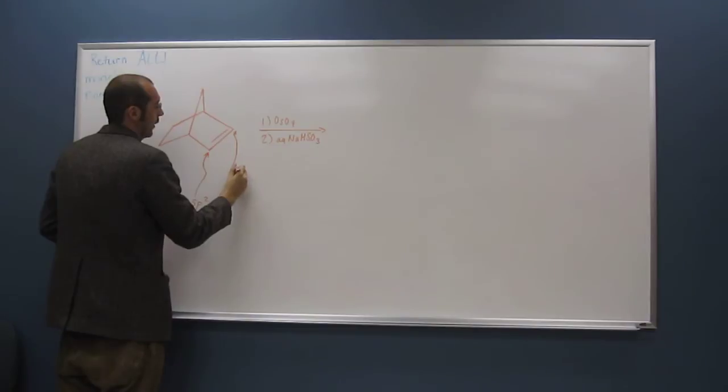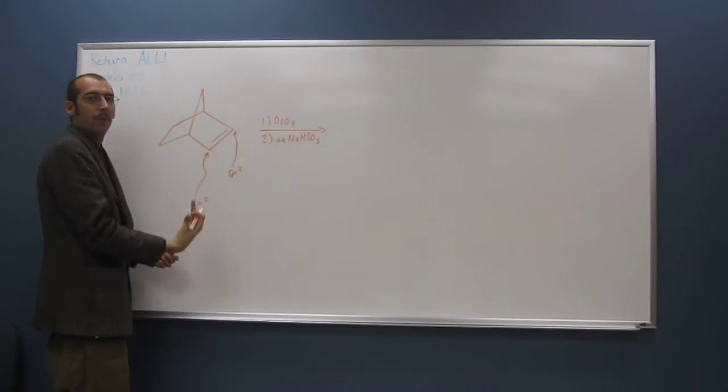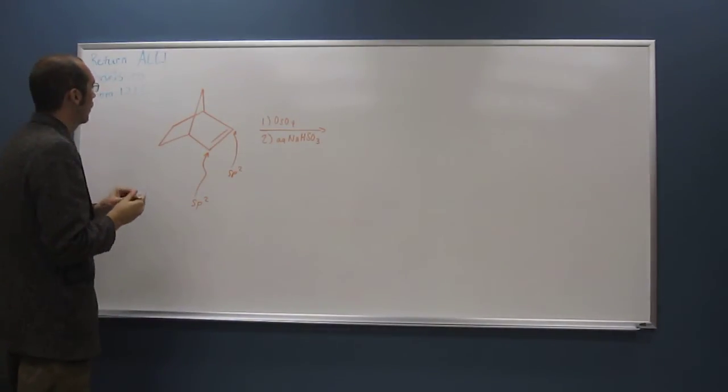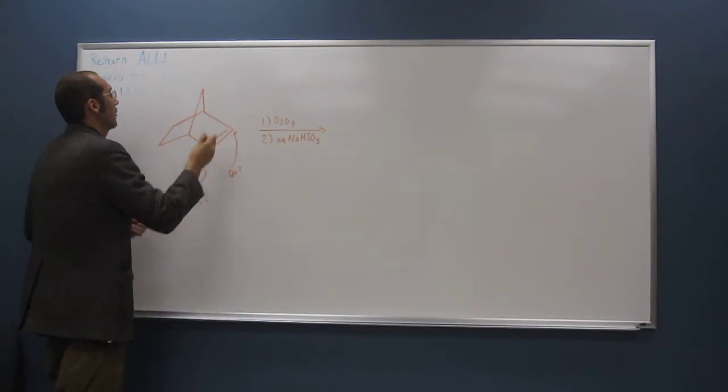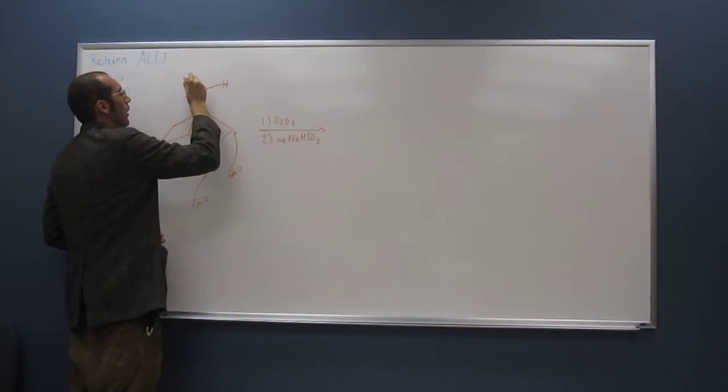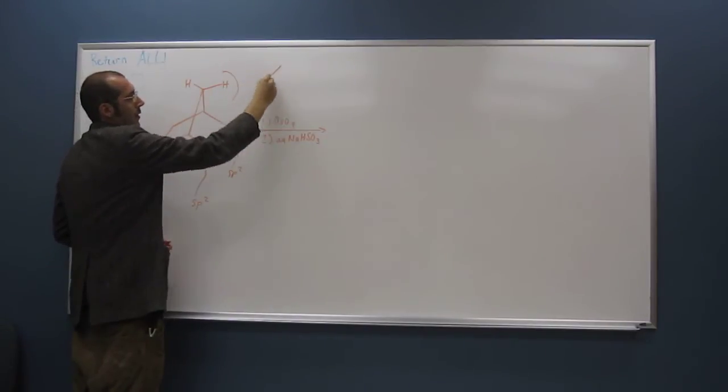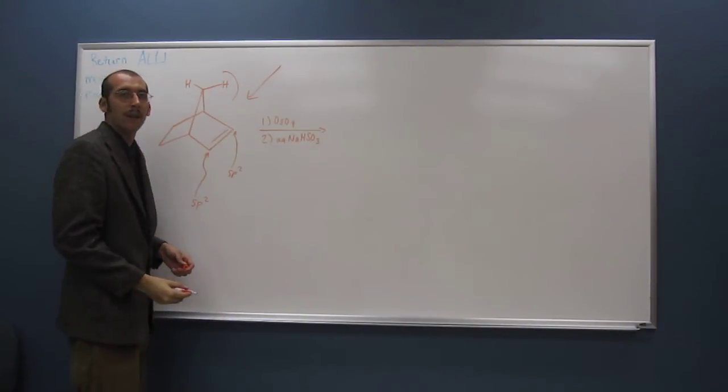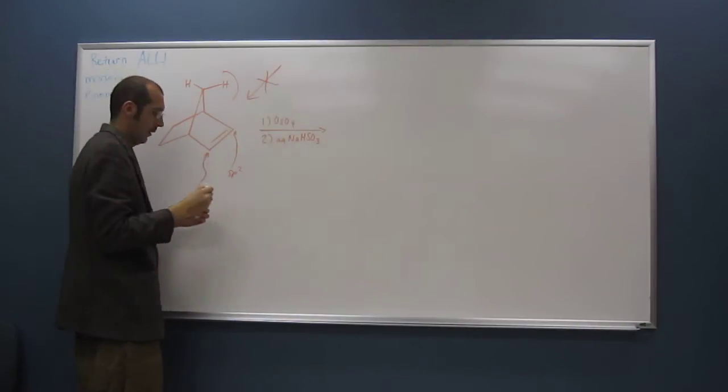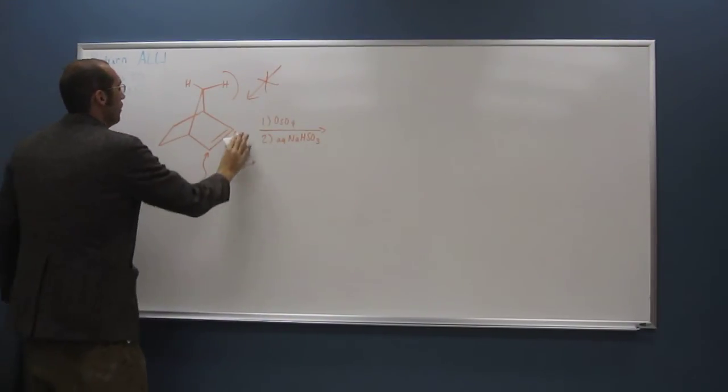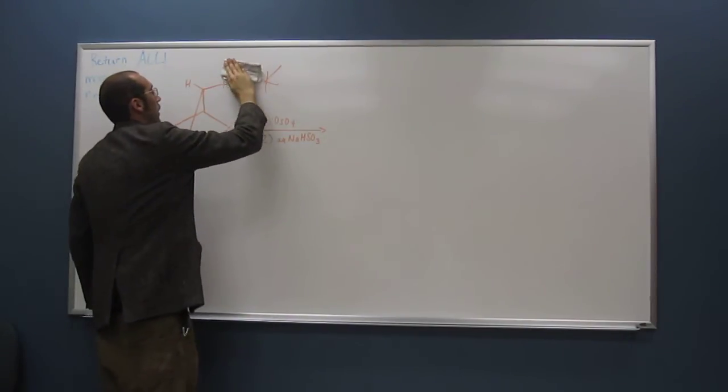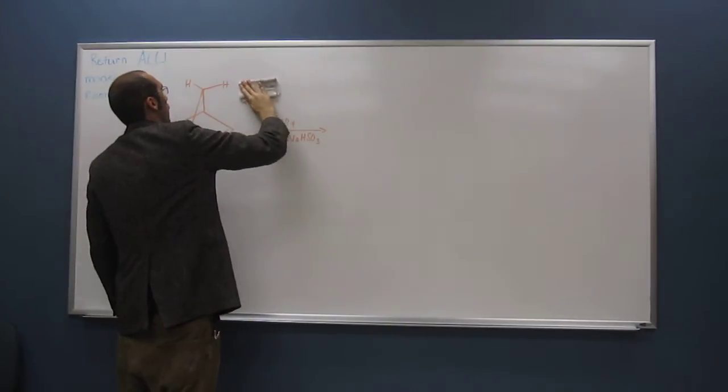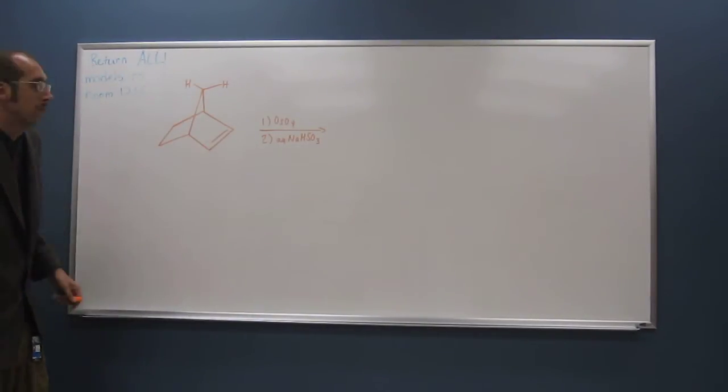So the thing can attack from the top or the bottom. This particular one's going to want to attack from the bottom more because of this bridgehead carbon, and that provides steric hindrance to something coming that way, so it's not going to do it. So you're thinking that the major product of this is going to be the diol from the bottom, right?